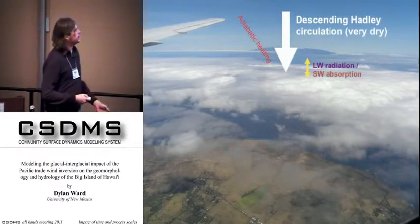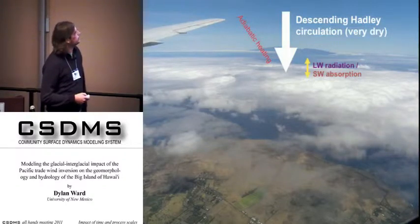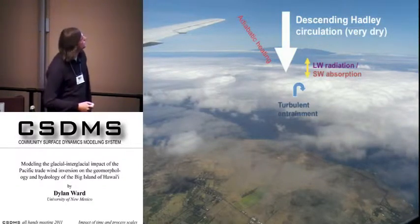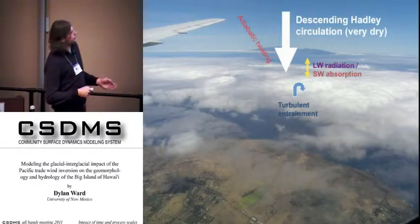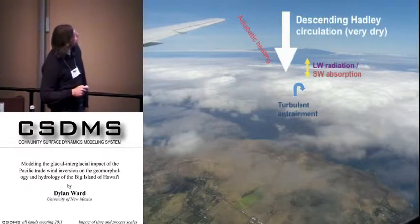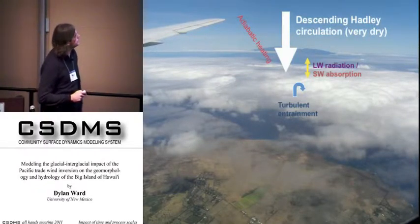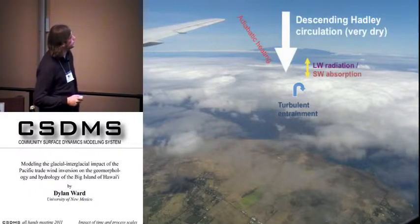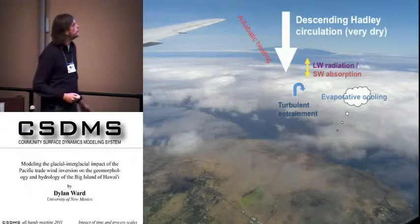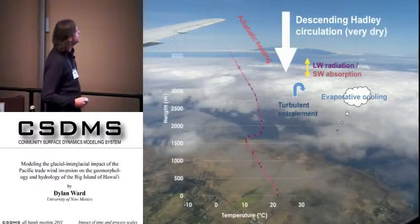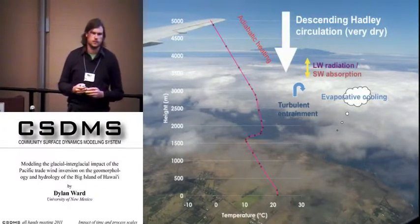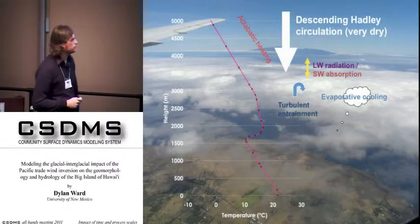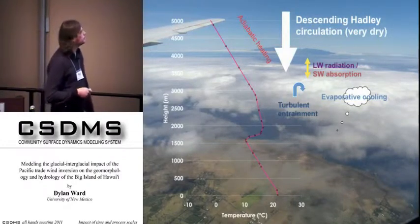So you form these clouds, and you end up with long-wave radiation from the tops of the clouds, short-wave absorption, turbulent entrainment at this interface of dry air descending into the marine boundary layer, and then evaporative cooling associated with that. The net effect of all of this is to create a temperature inversion that caps the cloud layer and appears something like 85% of days. It's very consistent, appearing across the subtropics because of these effects.